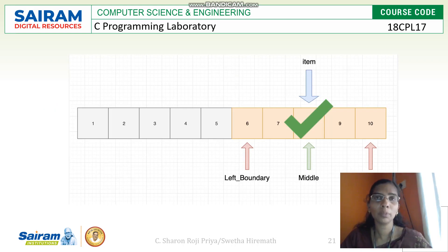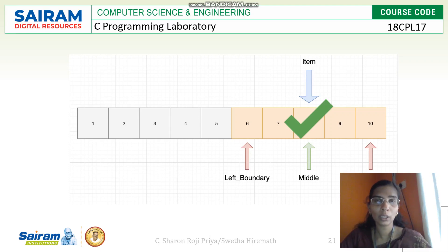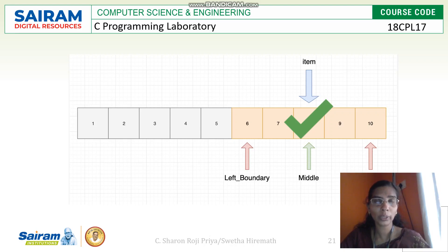First I will explain the logic of binary search. You are supposed to implement binary search in a one-dimensional array — that is your ordinary array. One important thing: when you are doing binary search, you are supposed to arrange the elements in ascending order. Your input definitely should be in ascending order.